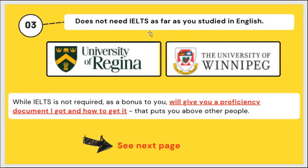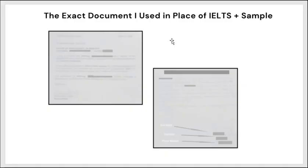Number three reason: the study route does not need an IELTS certificate as far as you studied in English. Nigeria is one of the countries listed as English-speaking. You will get a portal to check schools that do not require IELTS — for instance, the Universities of Regina and Winnipeg do not require IELTS. As a bonus, I'm going to give you a proficiency document I got from a Nigerian school that you can use in place of IELTS for schools that just want proof you studied in English.